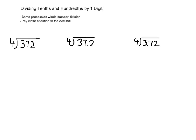Today we're going to be dividing tenths and hundredths by one digit. It's important to know that when you're dividing tenths or hundredths by a single whole number, the process is going to be exactly the same as dividing regular whole numbers. The only difference is that you have to pay close attention to where the decimal is in the dividend. We're going to get the exact same digits in each quotient — the only difference is where the decimal will be.